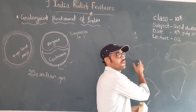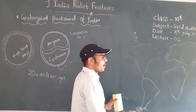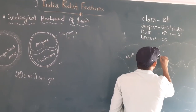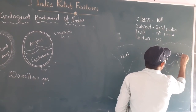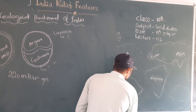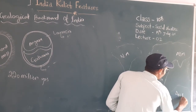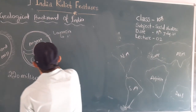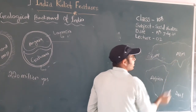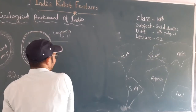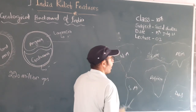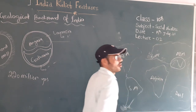Today, we have different continents. This is North America, this is South America, this is Europe and Asia, this is Africa, and this is Australia. From the Angara land, North America, Europe, and Asia were created. From the Gondwana land, South America, Africa, Australia, and along with these, our Indian peninsular were created.